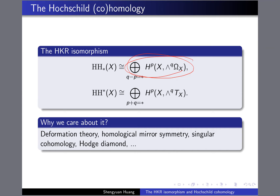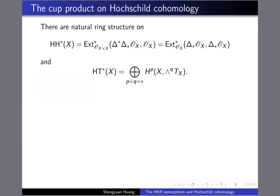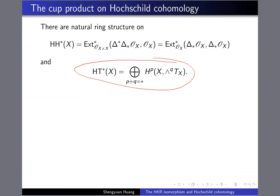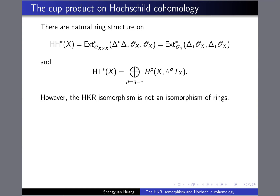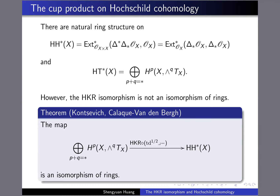The main motivation for my talk is the following observation: there are natural ring structures on both sides of the HKR isomorphism. On the Ext algebra, you have a natural algebra structure given by composition of morphisms in the derived category. On the polyvector field, you have a natural wedge product. However, the HKR is not a ring isomorphism — it does not preserve the product. This is a theorem claimed by Kontsevich and proved by Calaque and VandenBergh: you can add correction terms to the HKR isomorphism, then you get an isomorphism of rings.